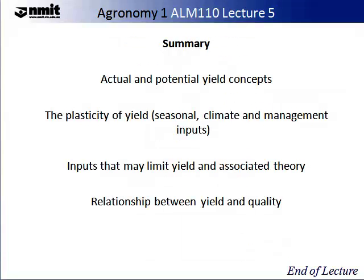This brings us to the end of Lecture 5. I hope after watching this lecture you understand the differences between actual and potential yield, that there is plasticity in yield — meaning the season, climate, cultivar, and manageable inputs can all affect this — inputs that may limit yield and associated theory, and finally that there is a relationship between yield and quality, and sometimes this relationship is critical with respect to payment and how this is achieved.